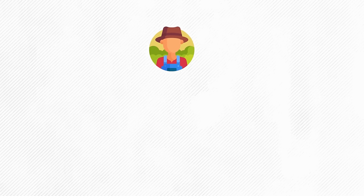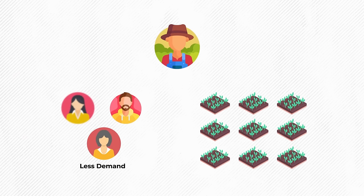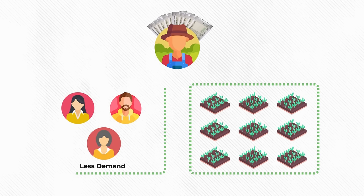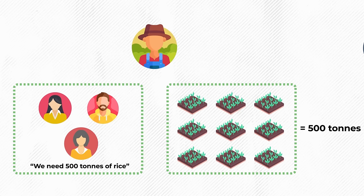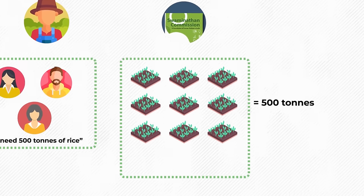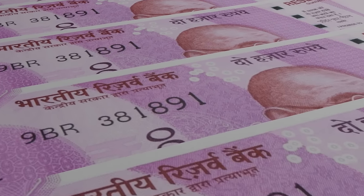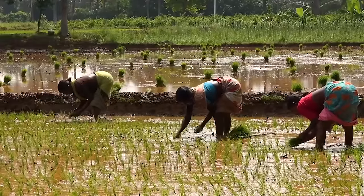Thirdly, if farmers know the government will pay a fixed price regardless of demand and supply, they will deliberately produce more crops even if there is less demand. For example, a farmer who would normally produce 500 tons of rice to match market demand will double production to 1,000 tons if he gets a fixed price. The farmers will make more money in the short term, but this surplus from millions of farmers will lead to a demand-supply nightmare. As a result, the government will have to decrease the MSP to balance demand and supply, so in the long term, because of oversupply, MSP will fall to rock bottom and farmers will face a nightmare again.